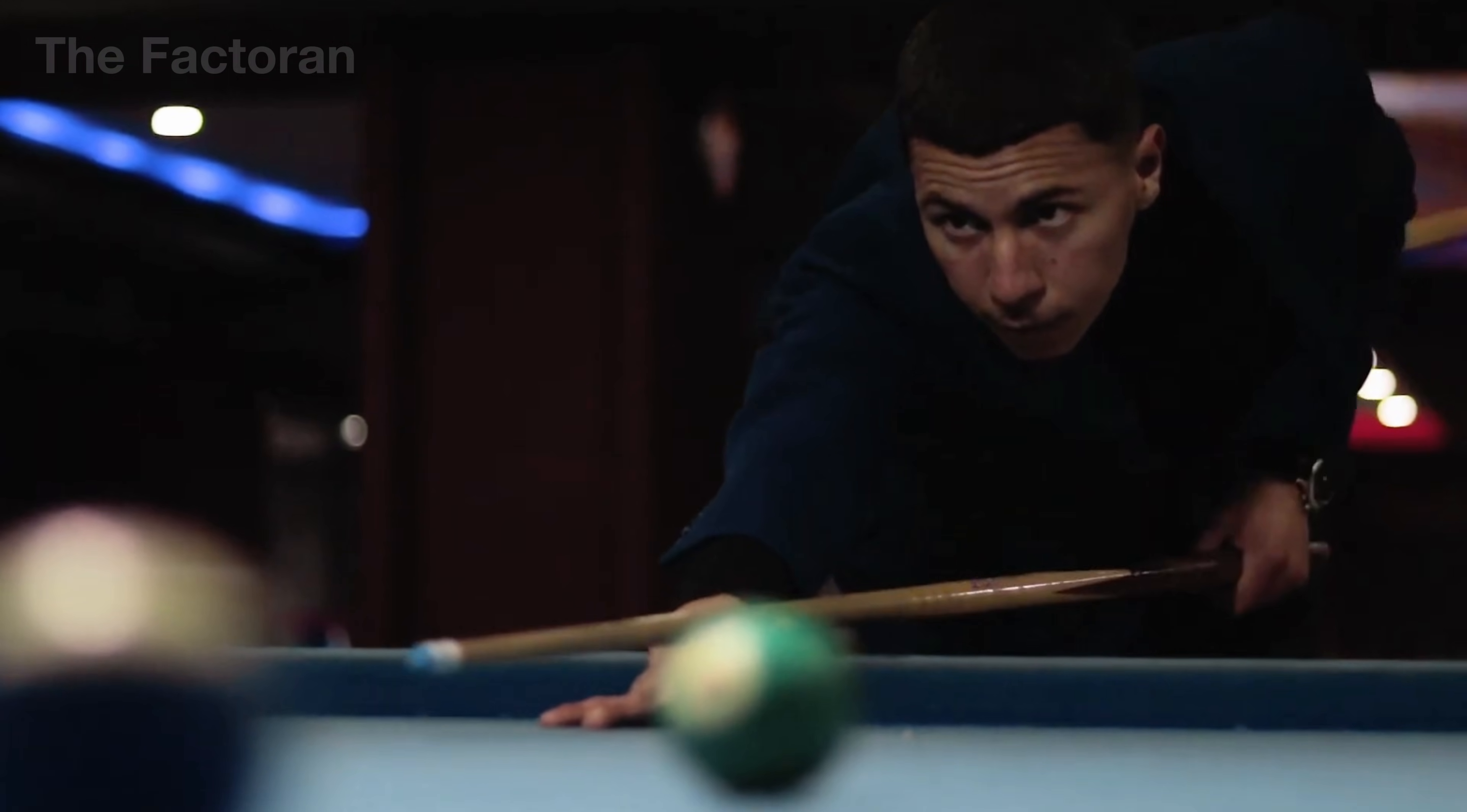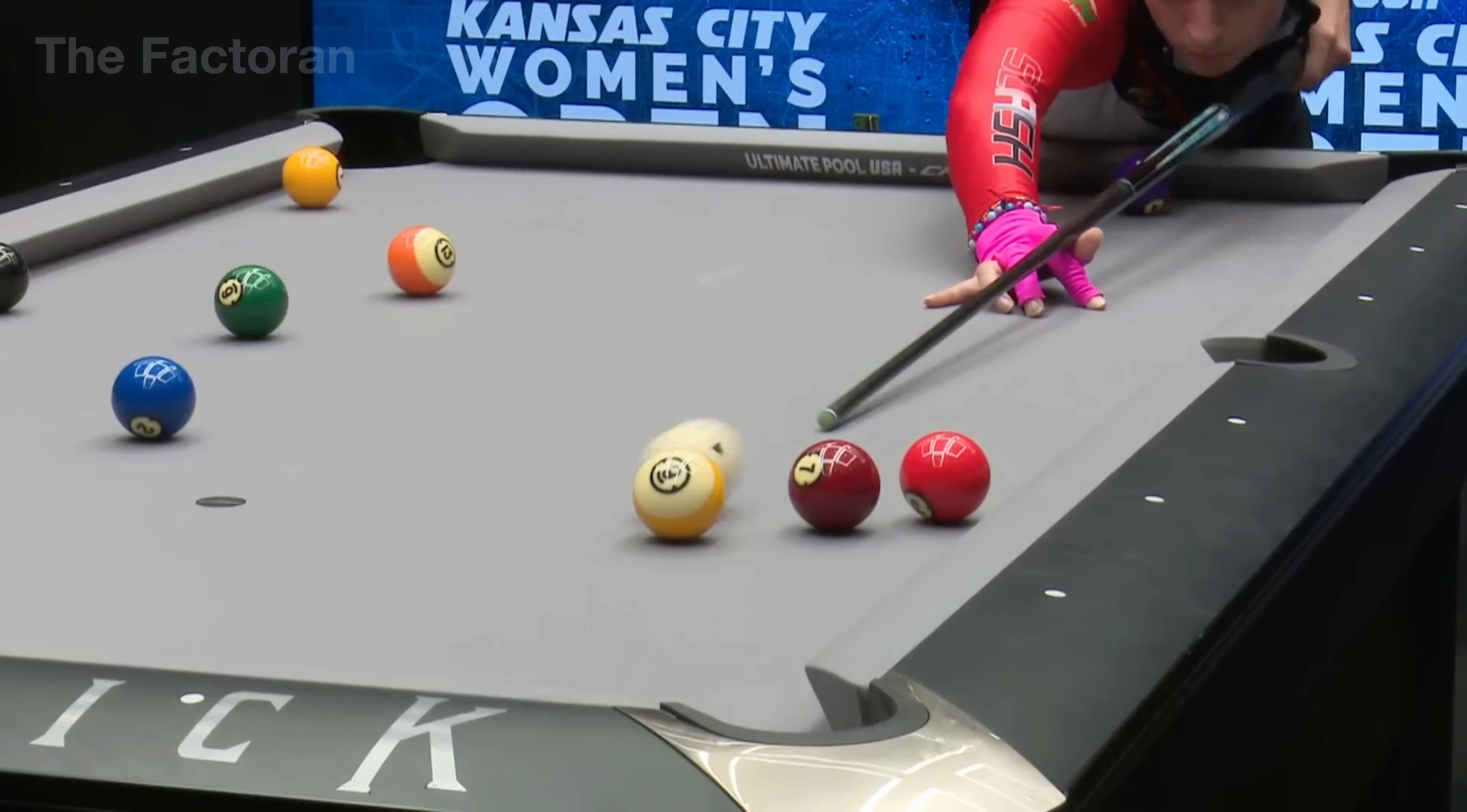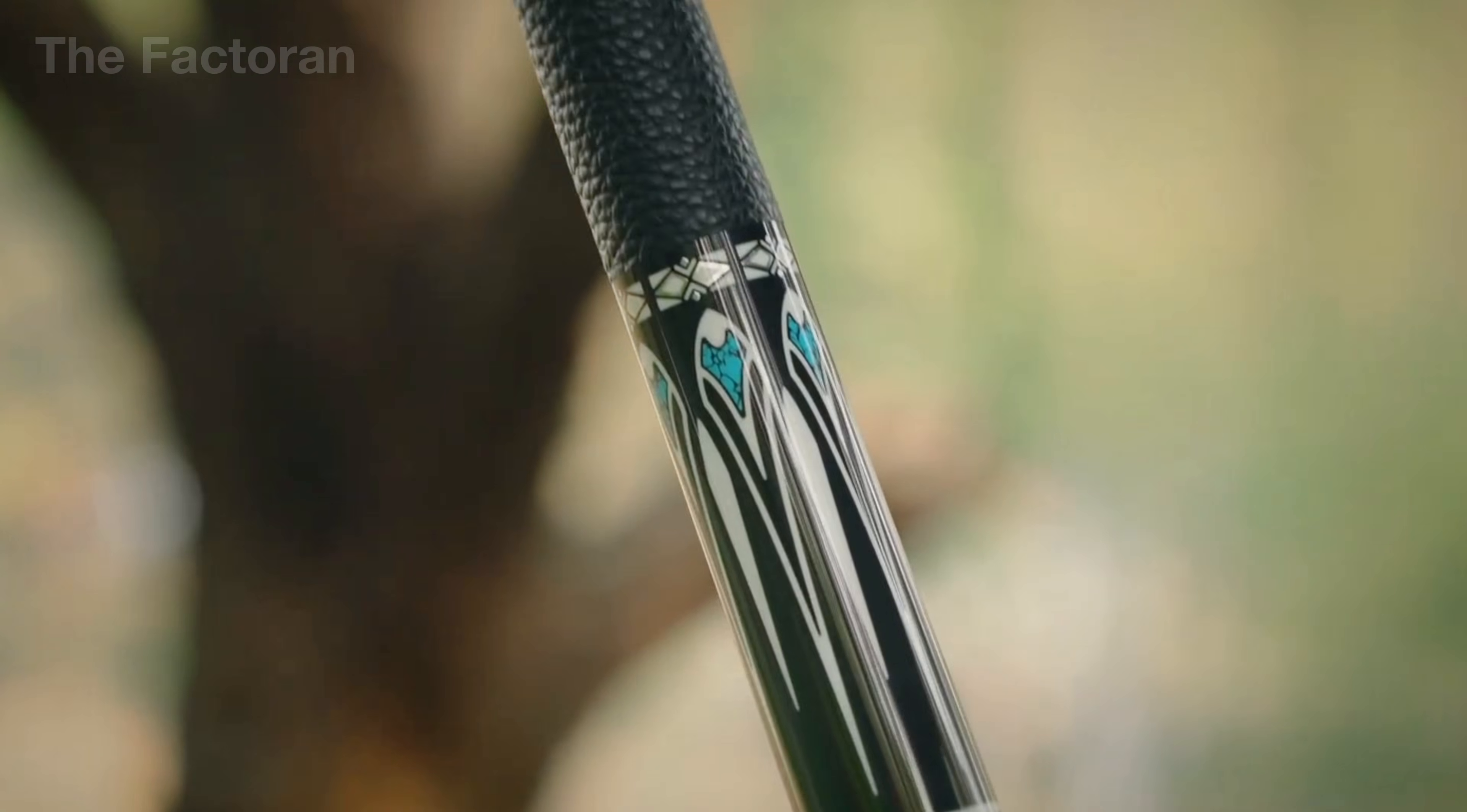At first glance, a billiard cue looks like nothing more than a simple piece of wood taken from deep within the forest. Yet in reality, nearly 7 million cues are manufactured every year to satisfy the passion of billions of players across the planet.